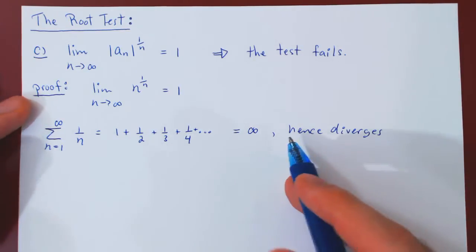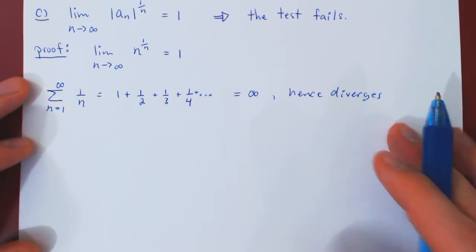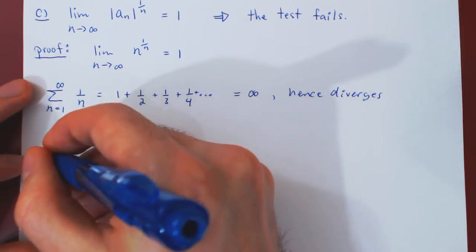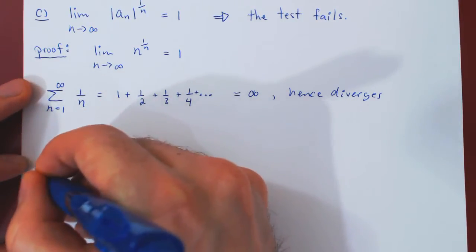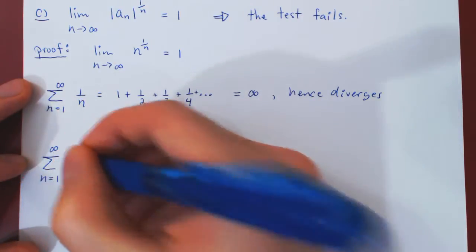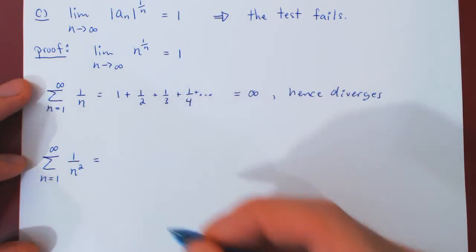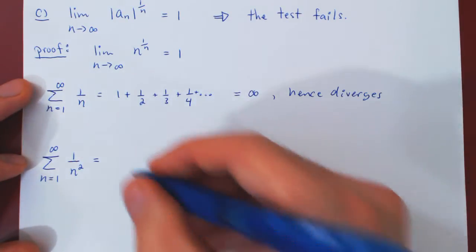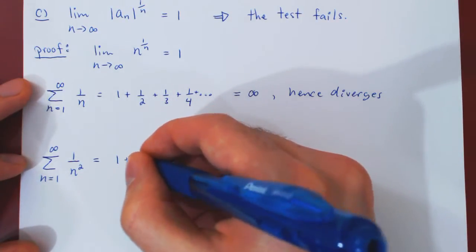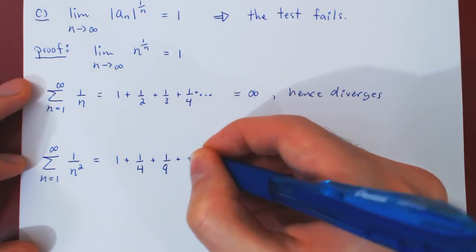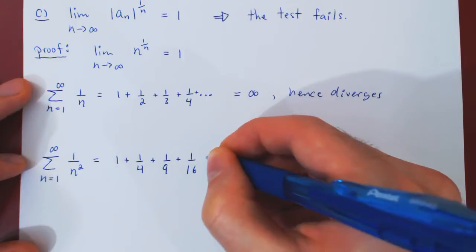So here's the first series. Let's now look at a p-series where p is not 1, but where p is equal to 2. So summing from 1 to infinity, now 1 over n squared. We can write the first few terms: 1 plus 1 quarter, plus 1 over 9, plus 1 over 16, and so forth.